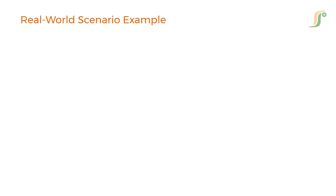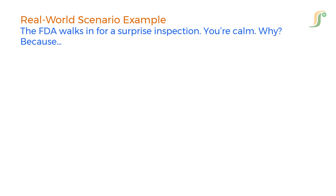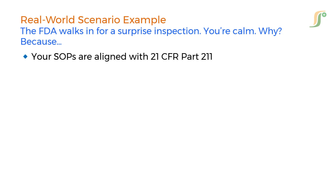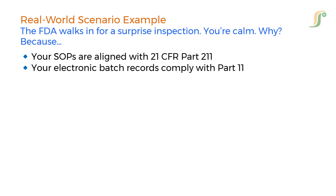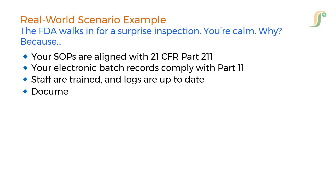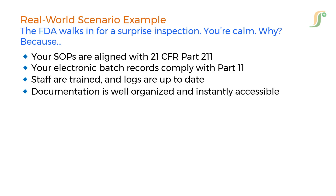Here is a real-world scenario. Imagine the FDA walks in for a surprise inspection. You are calm — because your SOPs are aligned with 21 CFR Part 211, your electronic batch records comply with Part 11, staff are trained and logs are up to date, and documentation is well organized and instantly accessible. You pass the inspection — not by chance, but because your team lives and breathes compliance. This is the power of understanding and applying 21 CFR in real life.